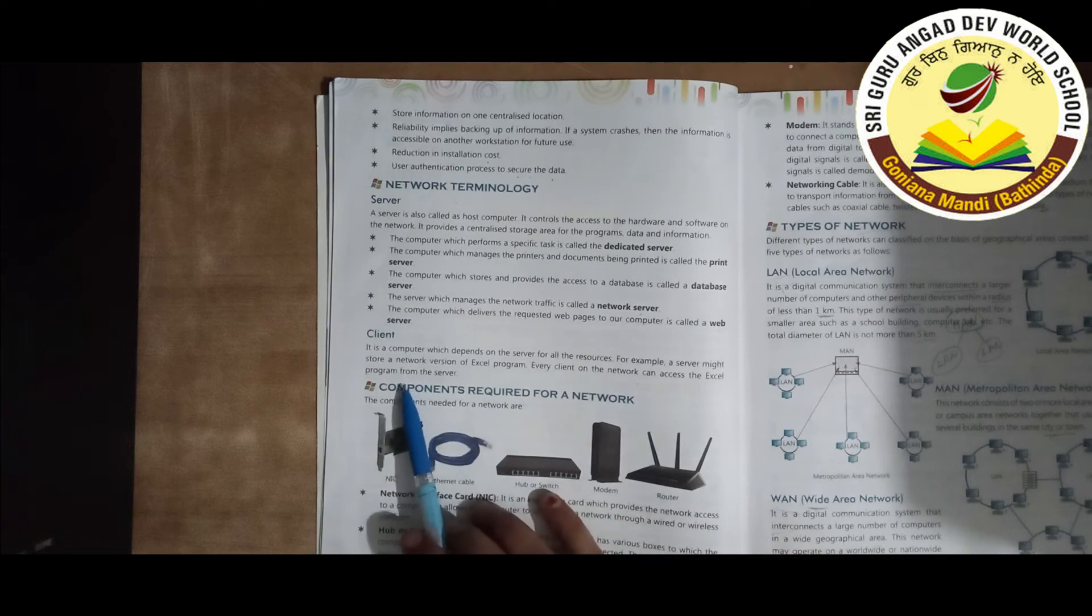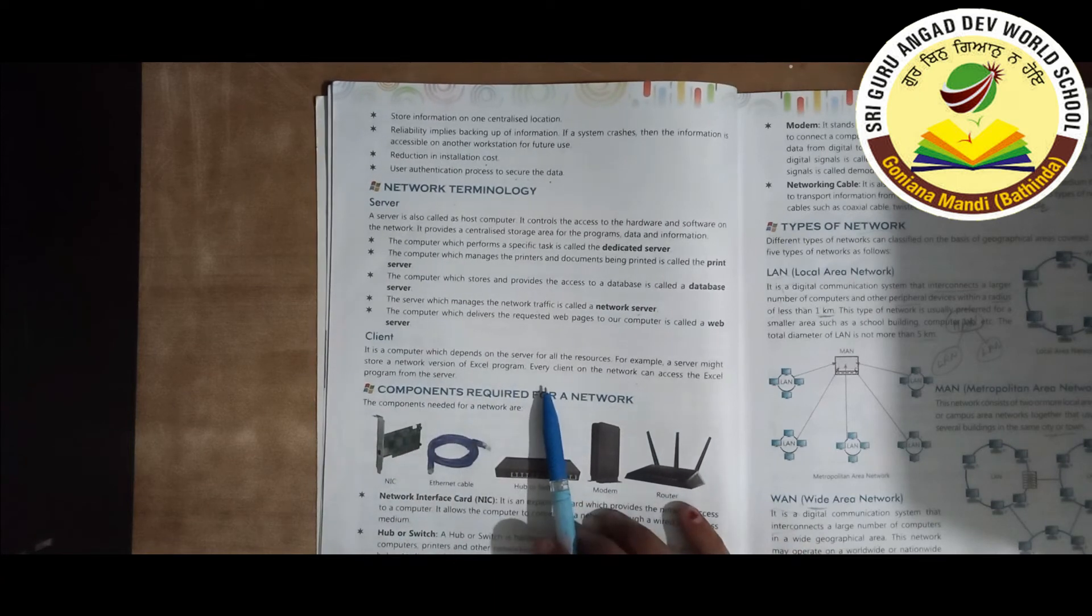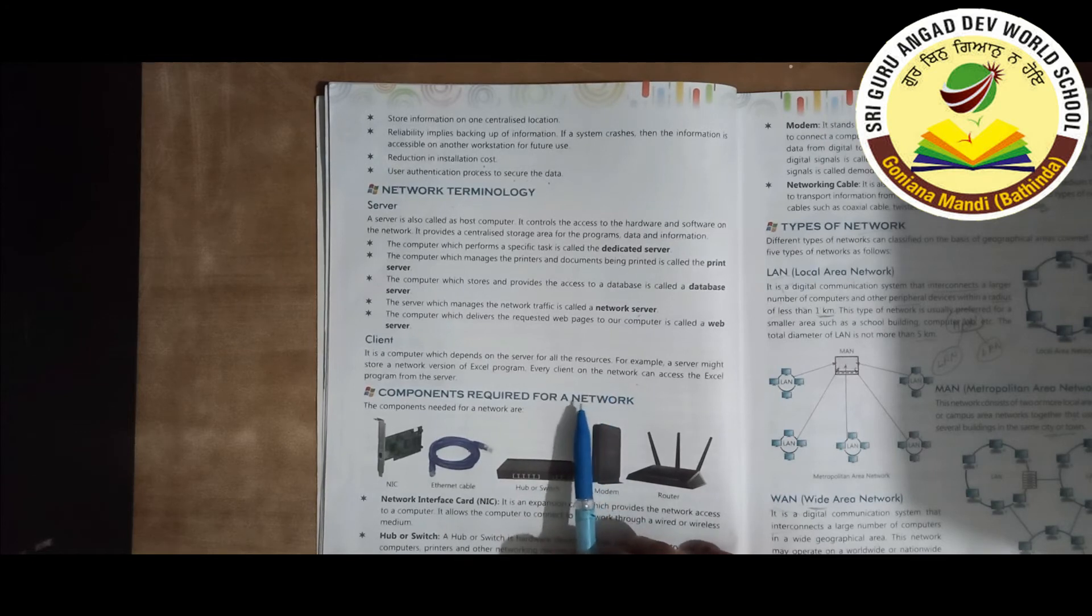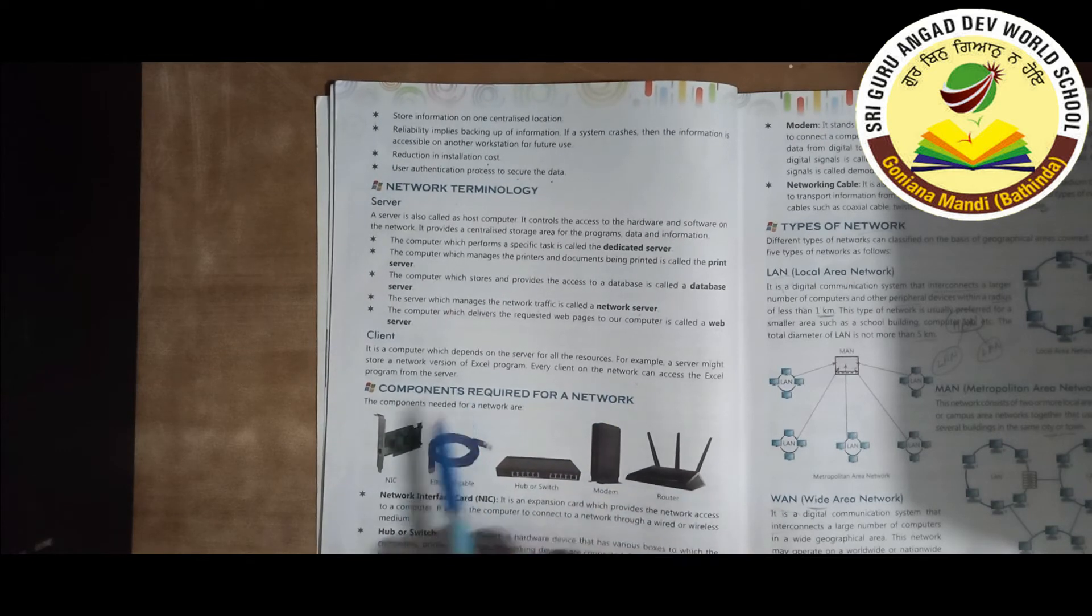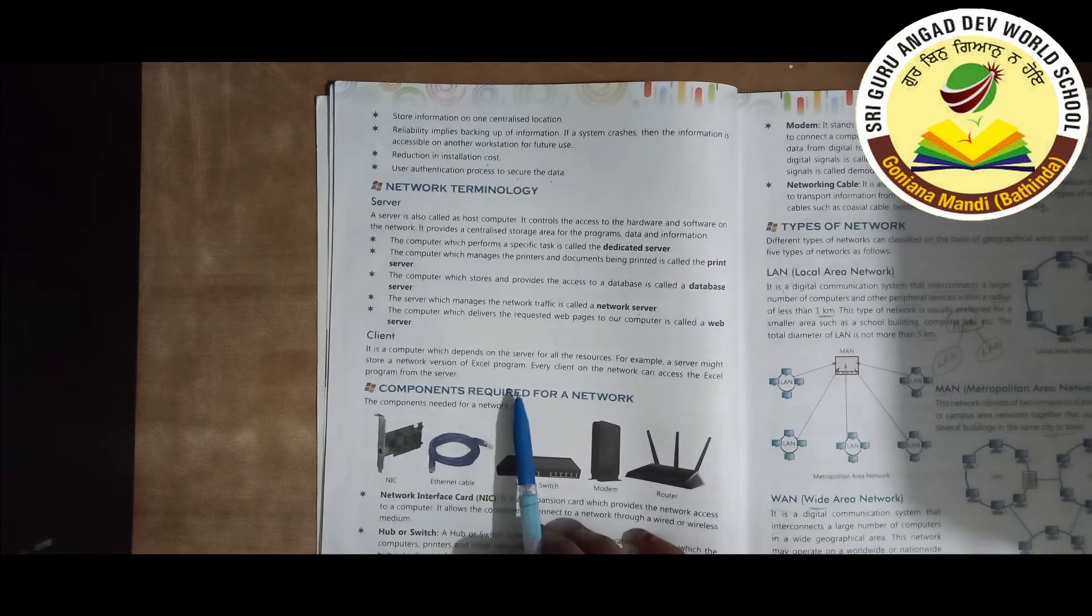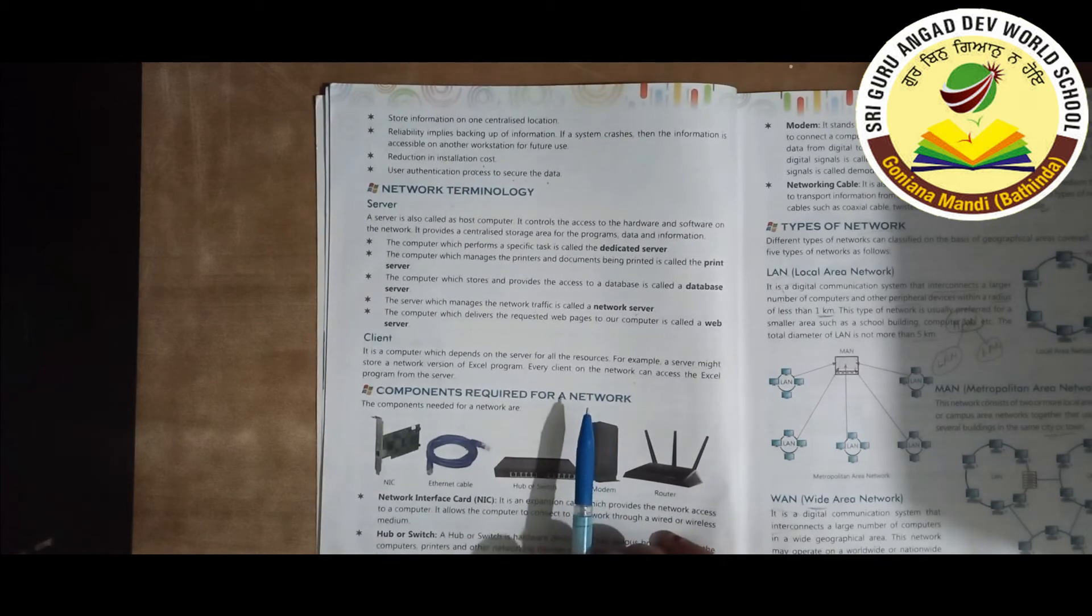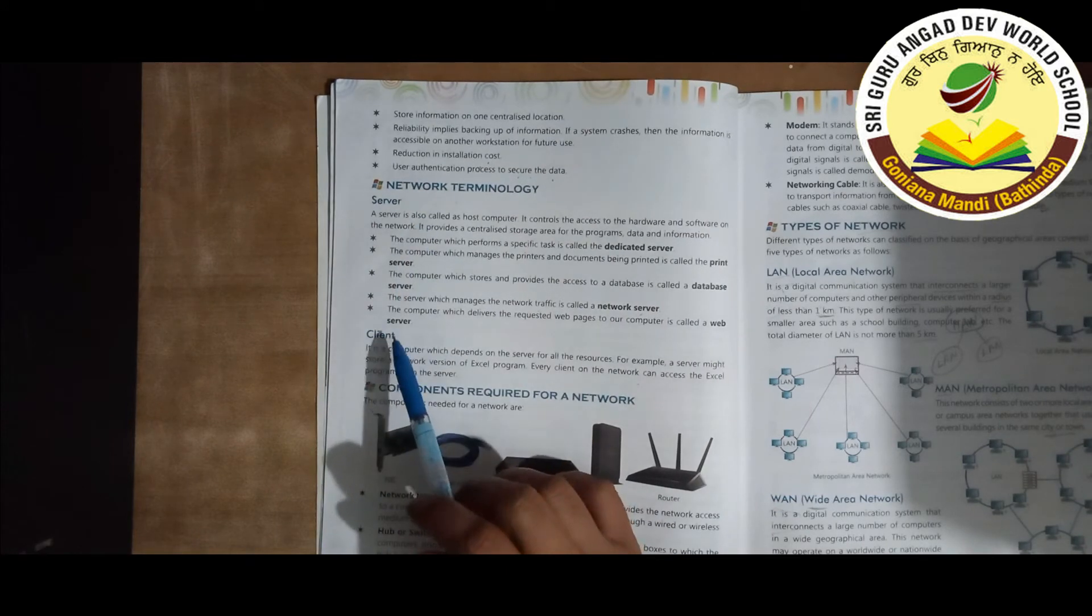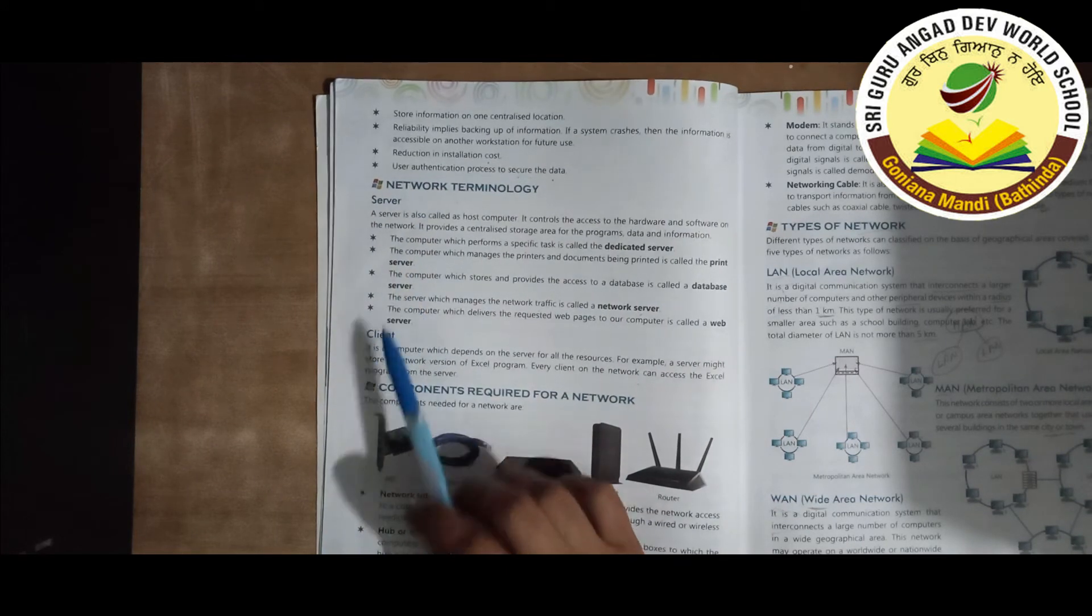The computer might store a network version of Excel program. Clients on the network can access the Excel program from the server. The server is the main computer from where the other clients can access the data.